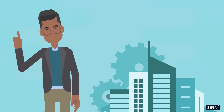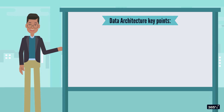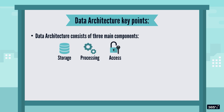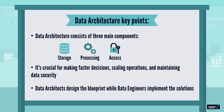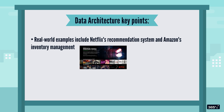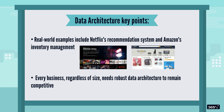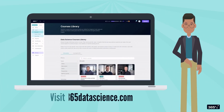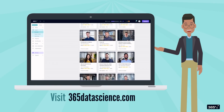That's a quick introduction to data architecture — a system or framework that turns raw data into strategic advantage. To recap: data architecture consists of three main components — storage, processing, and access. It's crucial for making faster decisions, scaling operations, and maintaining data security. Data architects design the blueprint, while data engineers implement the solutions. Real-world examples include Netflix's recommendation system and Amazon's inventory management. Every business, regardless of size, needs robust data architecture to remain competitive. Check out our comprehensive courses at 365datascience.com for more in-depth content on data architecture, engineering, and analytics.